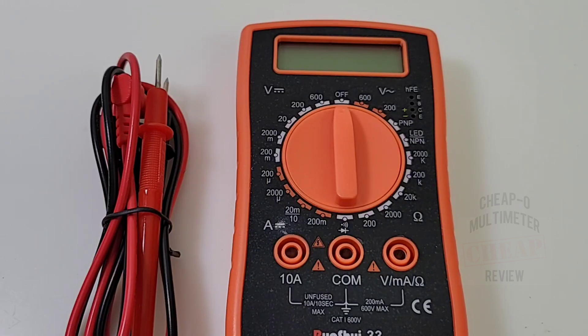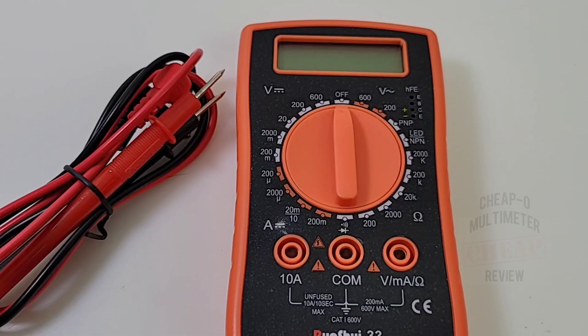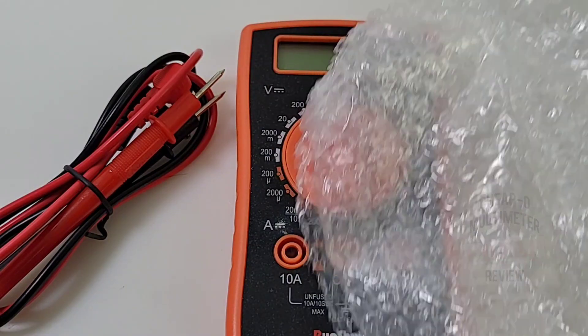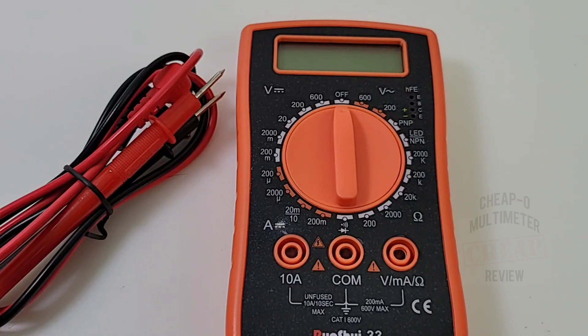Non-auto ranging, 2000 counts of cheapo goodness. What do you get in the box? Well, you don't even get a box. This came in one of those little bubble wraps. If it keeps the price down, so be it.